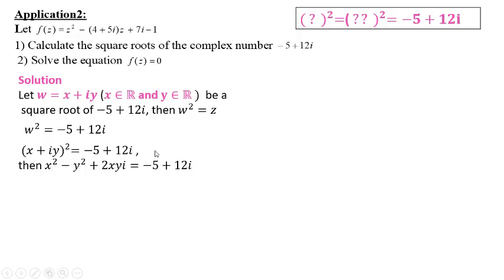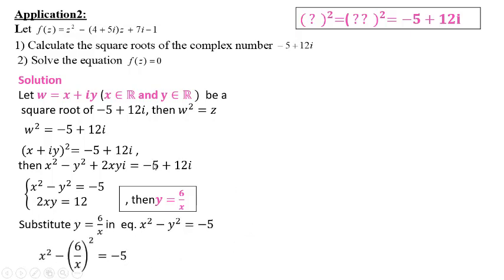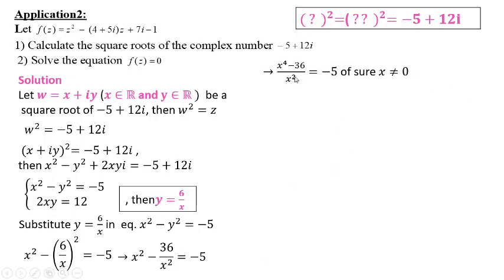These two complex numbers are equal when the real part equals the real part and the imaginary part equals the imaginary part. From 2xy = 12, we get y = 6/x. Substitute y into the first equation: instead of y, use 6/x, which becomes (6/x)². Square 6 to get 36, over x². Take x² as the common denominator, and the equation becomes: x⁴ − 36/x² = −5. Of course, x ≠ 0.